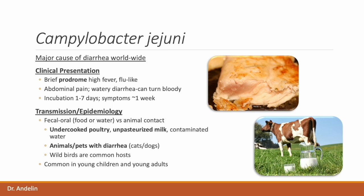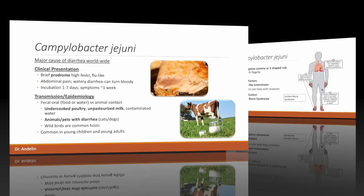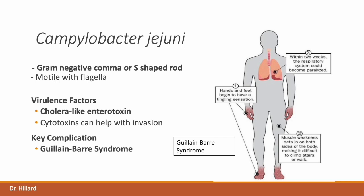Transmission for Campylobacter can occur through fecal-oral route or through direct contact with animals. Uncooked poultry such as chicken is a major source; however, it can also spread through unpasteurized milk, contaminated water, or direct contact with animals or pets such as cats and dogs that have diarrhea. Wild birds are considered common hosts. Campylobacter is common in young children but also becomes prevalent among individuals in their 20s. Campylobacter jejuni is a gram-negative comma- or S-shaped rod that is motile, which facilitates adherence and colonization. Virulence factors include a cholera-like AB enterotoxin that secretes sodium chloride into the bowel lumen, osmotically pulling water with it, as well as cytotoxins that cause direct epithelial damage facilitating invasion.